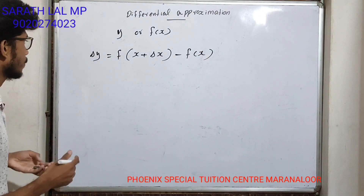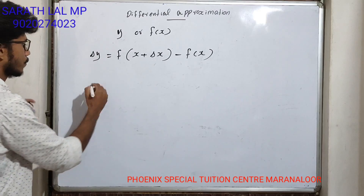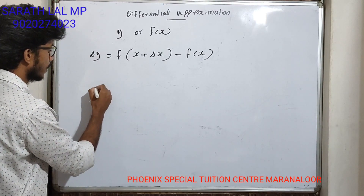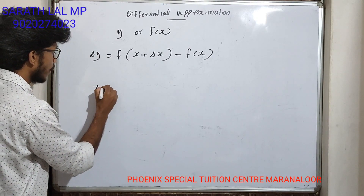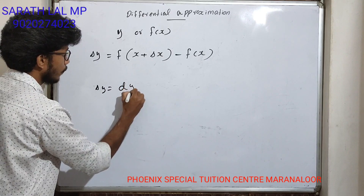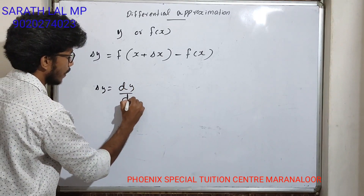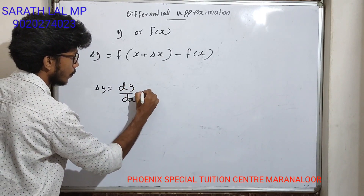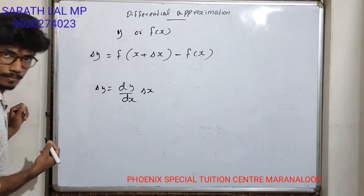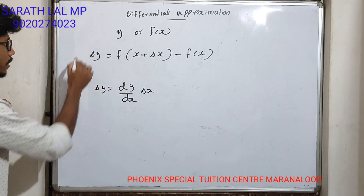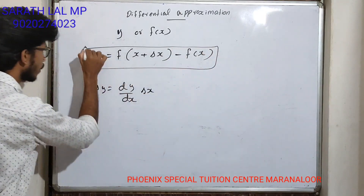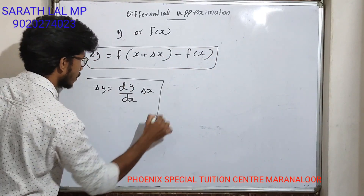The second step is: delta y equals dy by dx into delta x. Let's go over these two steps.